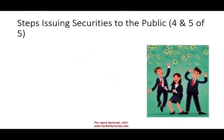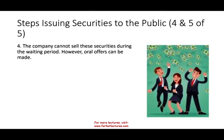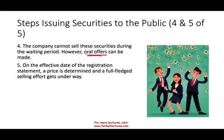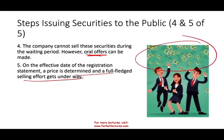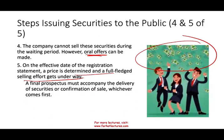The company cannot sell securities during the registration period; however, they can make oral offers. Then on the effective date, once the date is effective and the price is determined, a full-fledged selling effort gets underway and you can sell your stocks. A final prospectus — which doesn't have the red herring designation — must accompany the delivery of securities or confirmation of sale, whichever comes first.